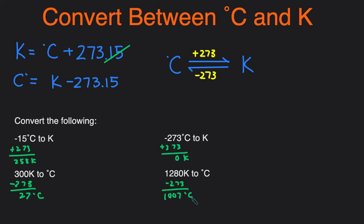Now that's how you can easily convert between degrees Celsius and degrees Kelvin. Degrees Celsius plus 273 to get Kelvin and from Kelvin just subtract 273 to get back to degrees Celsius.